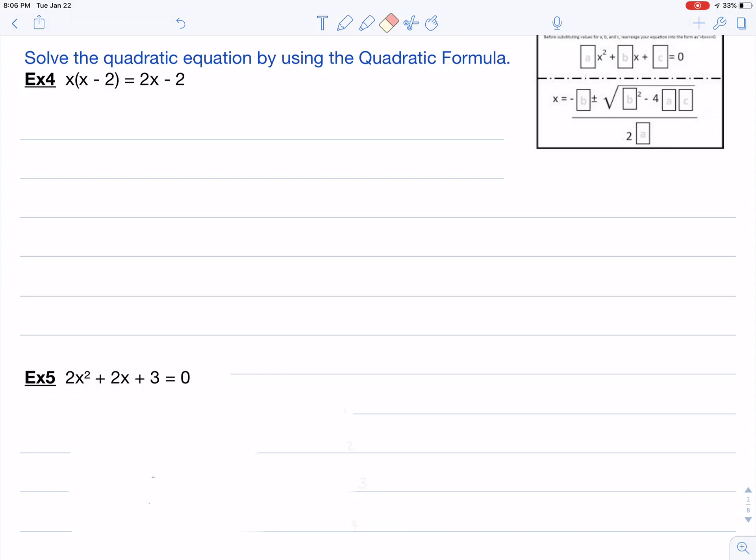So you notice that you have your A, your B, and your C value. A is 2, B is also 2, and your C is 3. So using your quadratic formula then, plug each of those values in to your quadratic formula.